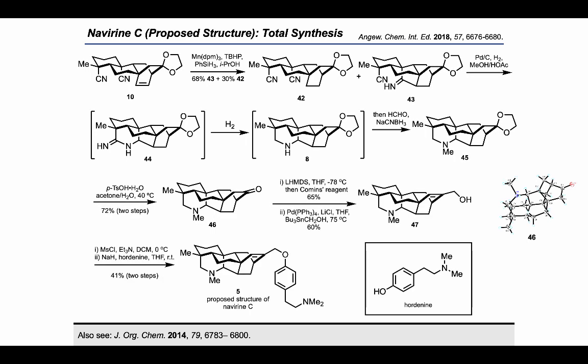A four-step sequence enabled the synthesis of methylene C. However, its spectra did not fit with the reported one, so we can only claim that we finished the synthesis of the proposed structure of methylene C using seven steps from the advanced intermediate.